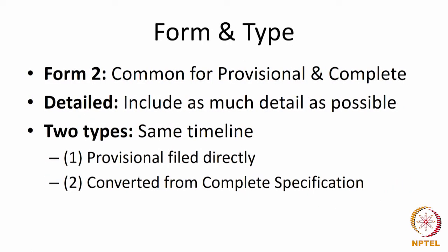Form 2 is used; it is a common form for both provisional and complete specifications. You can include as much detail as possible. There are two types of provisional: one is a provisional filed directly as a provisional, and the second is a provisional converted from a complete specification — a downgraded or purported complete which gets downgraded into a provisional.